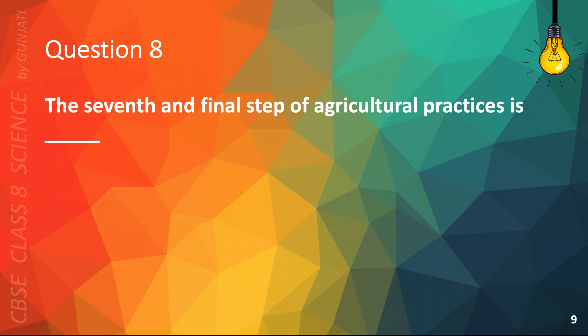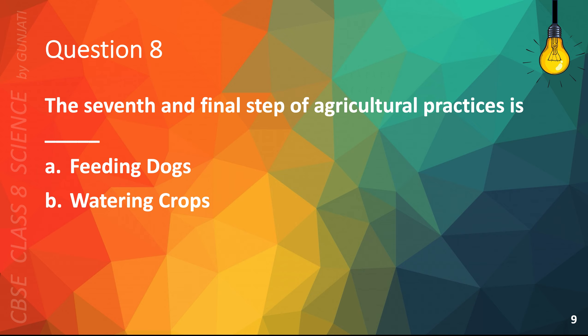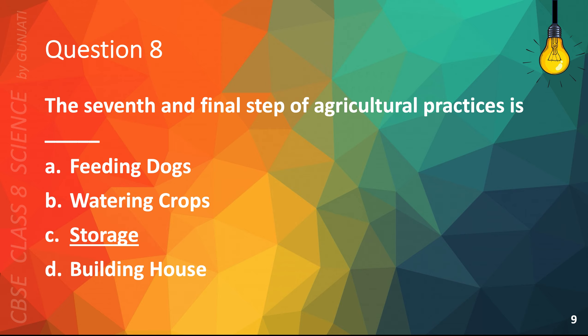Question 8. The seventh and final step of agricultural practices is: A. Feeding dogs, B. Watering crops, C. Storage, or D. Building house. The correct answer is C. Storage.